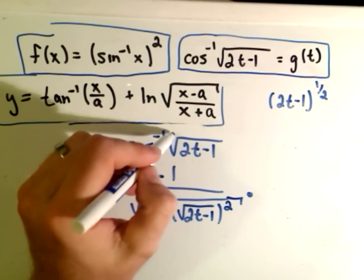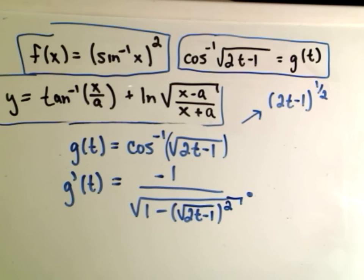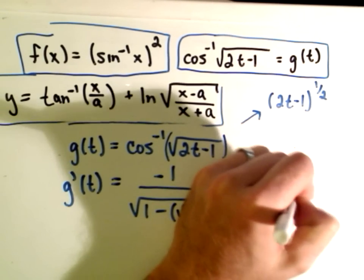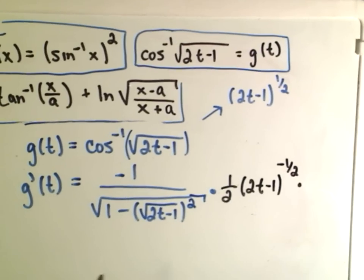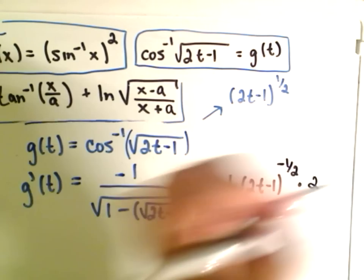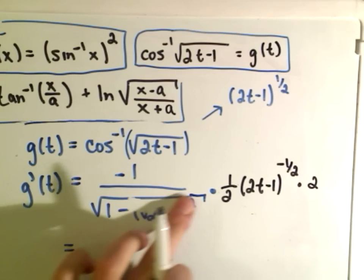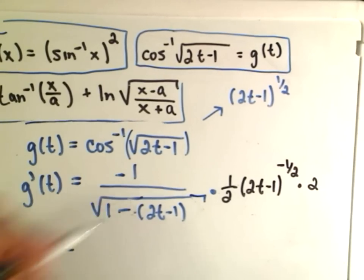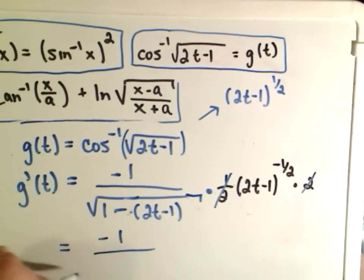and remember I could write that as 2t minus 1 to the 1 half power. Well, if I take the derivative of the square root portion, the derivative will be 1 half, I leave the inside alone, 2t minus 1 to the negative 1 half. But then again, we have to multiply by the derivative of the inside of that stuff, which is just going to be times 2. Alright, so we could simplify this down maybe a little bit. If we square the square root underneath the radical, we're just going to get 1 minus 2t minus 1 after we square that square root.